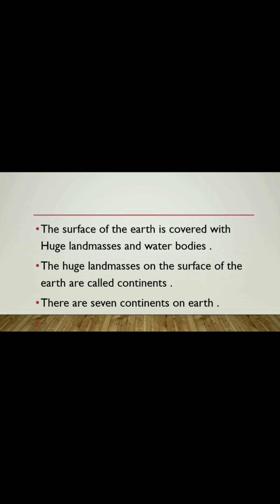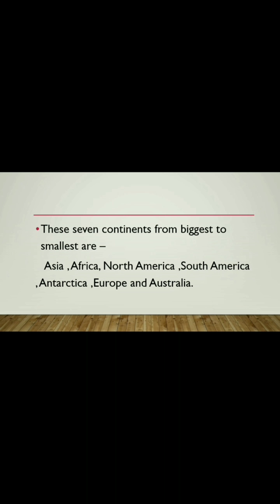There are seven continents on Earth. Arranged from biggest to smallest, these seven continents are: Asia, Africa, North America, South America, Antarctica, Europe, and Australia. Asia is the largest continent in the world and India is a part of Asia. Africa is the second largest continent, also known as the Dark Continent.